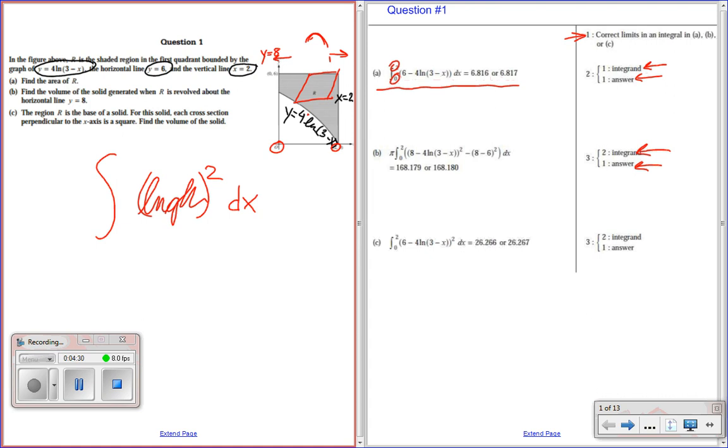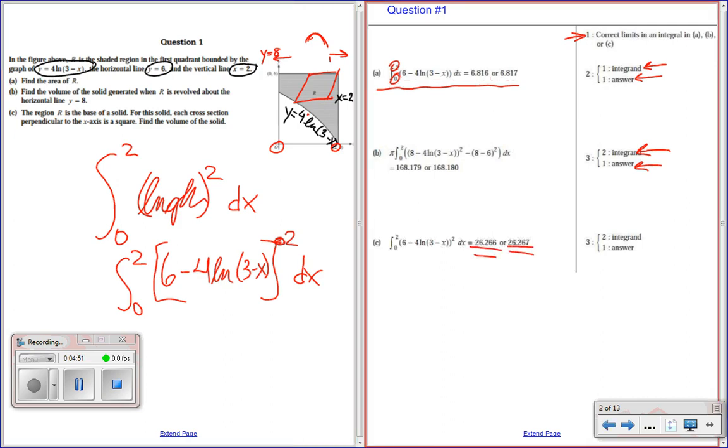So, again, we're going to be going from 0 to 2. Now, what is the length of the region R? Well, again, it's always upper minus lower if it's dx. So, I'm going to go 6 minus 4 natural log of 3 minus x. And then that whole thing squared. Squared dx. And, again, I plug you into the calculator and you get either this or this answer. So, that's worth three points.